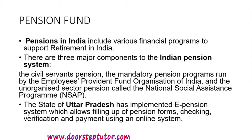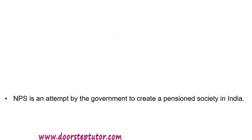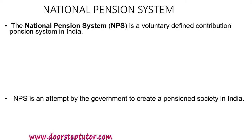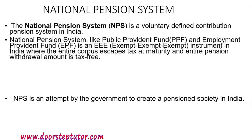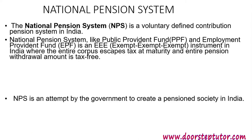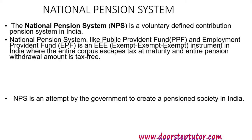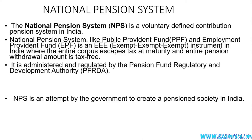The state of Uttar Pradesh has implemented an e-pension system which allows filing of pension forms, checking, verification, and payment using an online system. NPS is an attempt by the government to create a pensioned society in India. The National Pension System is a voluntary defined contribution pension system in India. Like PPF (Public Provident Fund) and EPF (Employee Provident Fund), it is an exempt-exempt-exempt instrument in India where the entire corpus escapes tax at maturity — you don't have to pay any sort of tax at maturity and the entire pension withdrawal amount is tax-free. It is administered and regulated by PFRDA, the Pension Fund Regulatory and Development Authority of India.